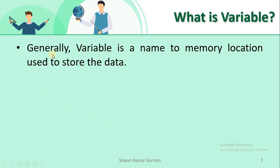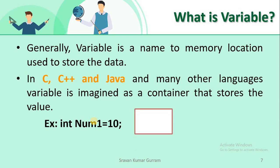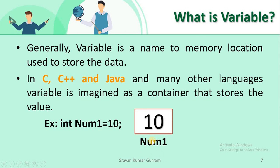What is a variable? Generally, a variable is a name given to a memory location that is used to store data. In C, C++, and Java, a variable is imagined as a container or box in which we store values. We create a memory location and give it a name for easy identification. For example, writing 'int number_one = 10' in C or C++ allocates a memory cell, stores the value 10 in it, and the variable name 'number_one' identifies that memory location.